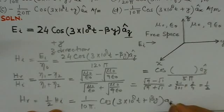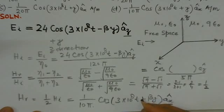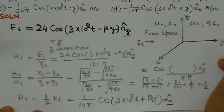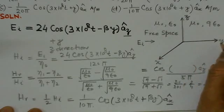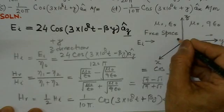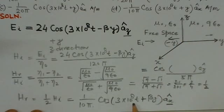That means the magnetic field is in the ax direction, in the x coordinate, and it is propagating, this is the reflected magnetic field propagating in the negative y direction. Because this is positive y direction, the reflected wave will go into the negative y direction. That is why the term 3×10^8t + βy is here.